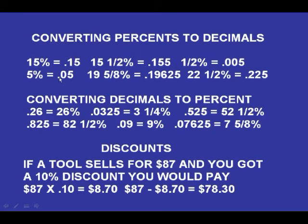5 percent equals .05. 19 and 5 eighths percent: the 5 eighths equals .625, so the whole thing — 19 and 5 eighths — would equal .19625. 22 and a half percent would equal .225.